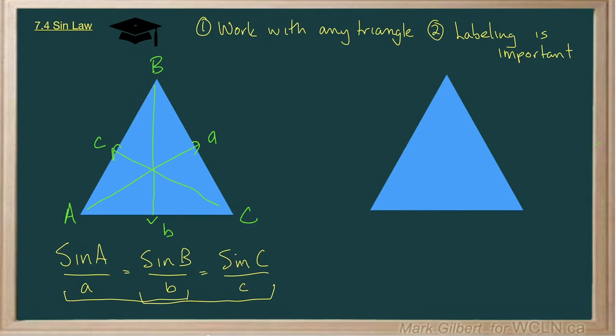That's the standard labeling, but I want you to realize here that it doesn't matter what the letters are. I can call this triangle E F G, where the side across from capital E is lowercase e, the side across from uppercase G is lowercase g, and the side across from uppercase F is lowercase f.